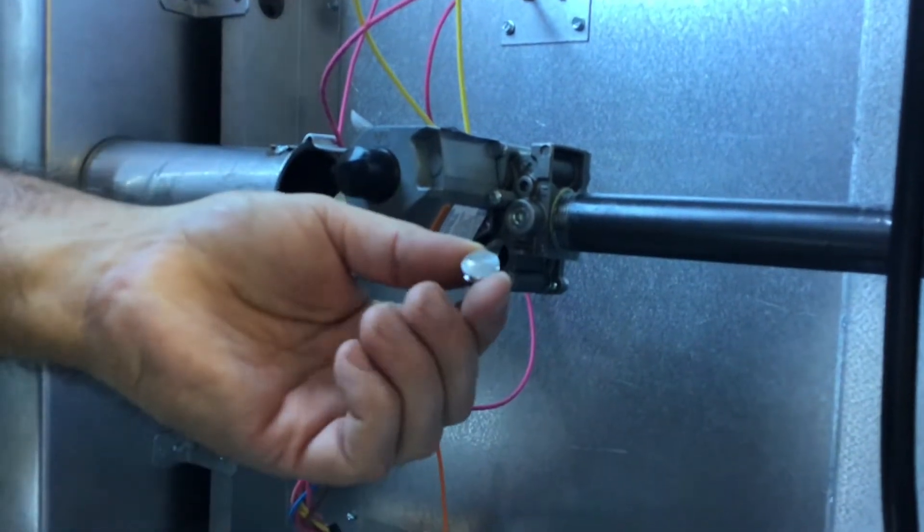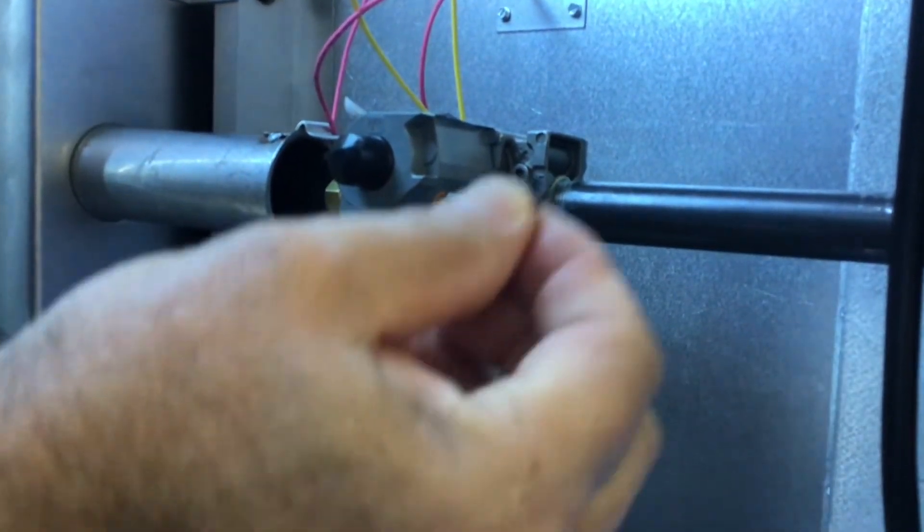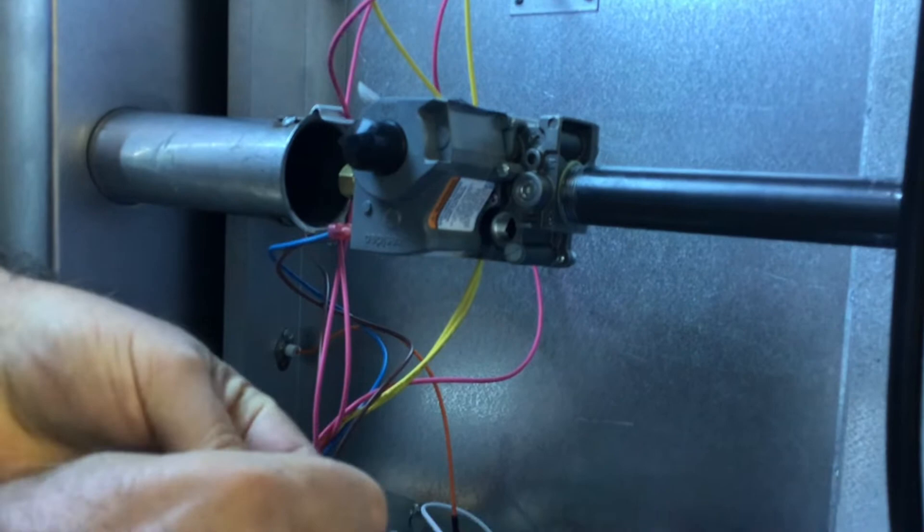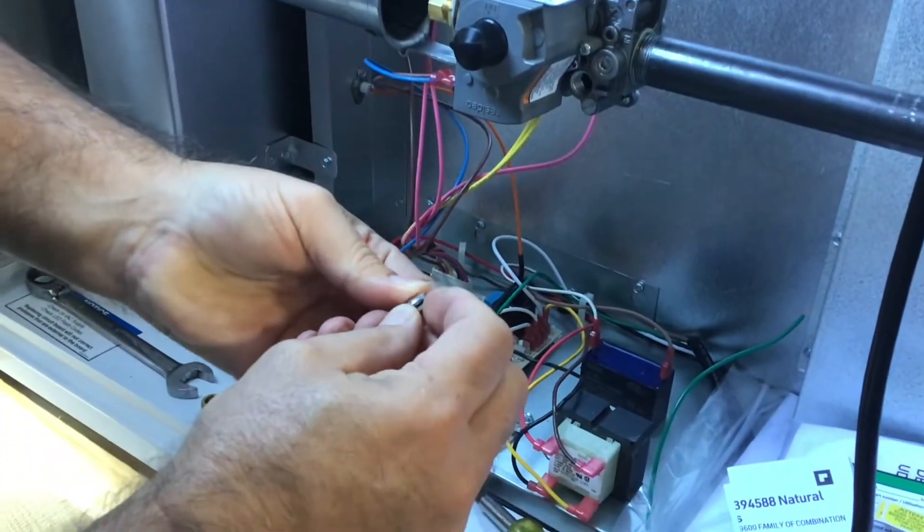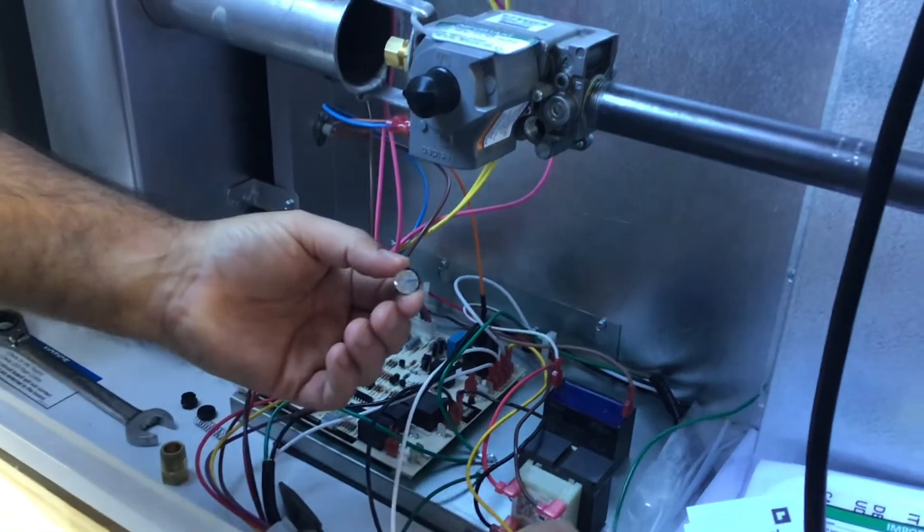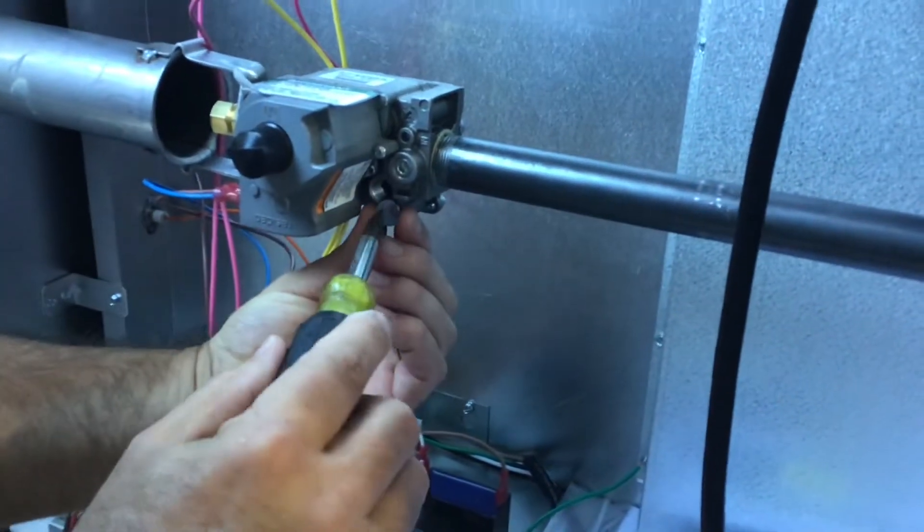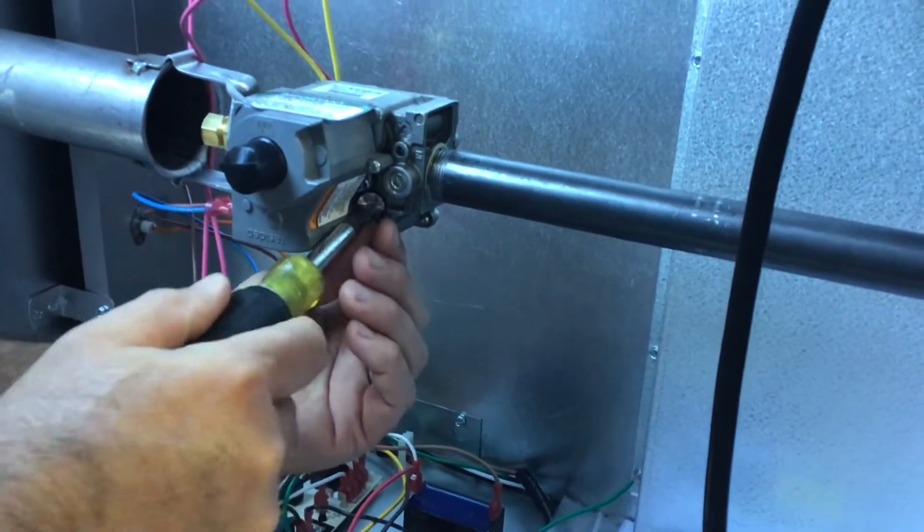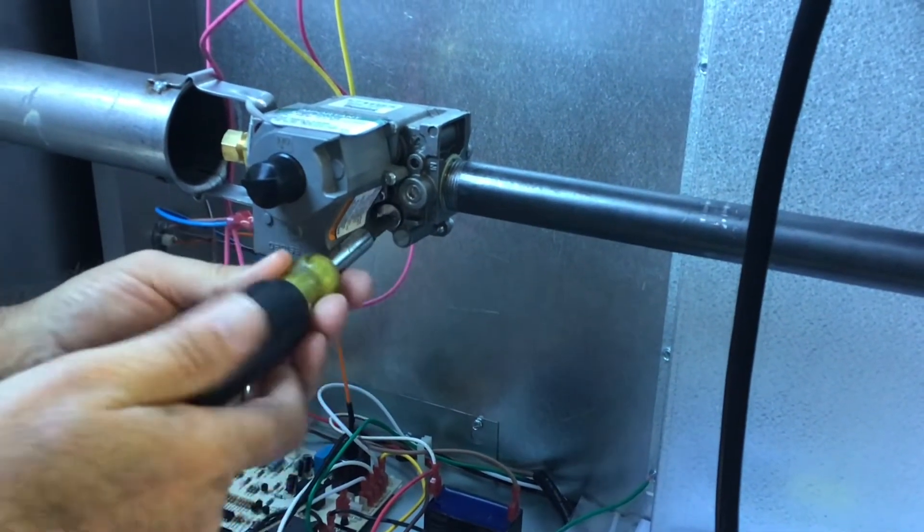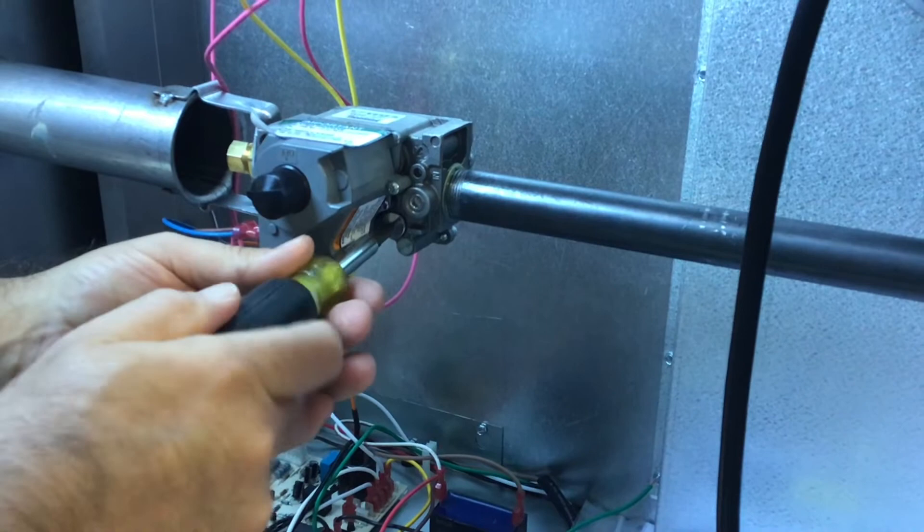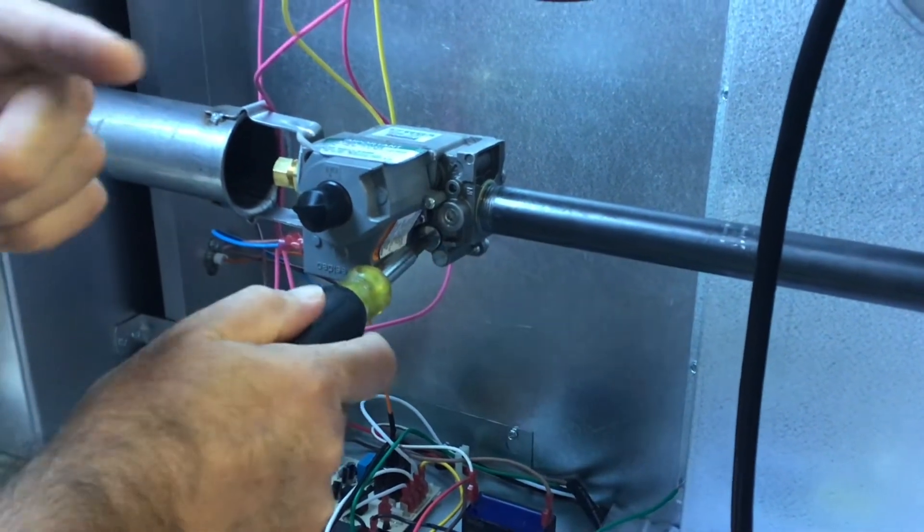Now we have the new silver cap and the new rubber grommet that goes on the cap. The rubber grommet goes around and that's your seal. Put the new cap in and just snug it down.